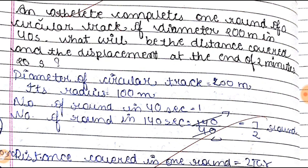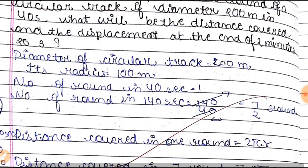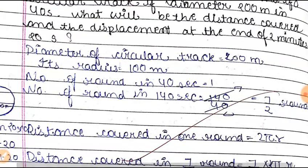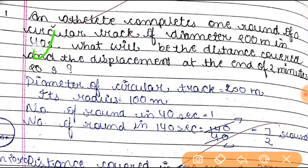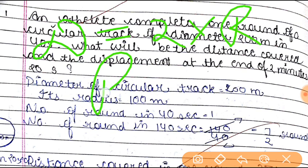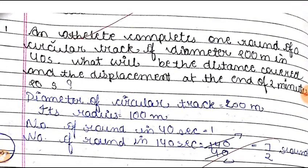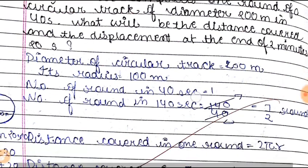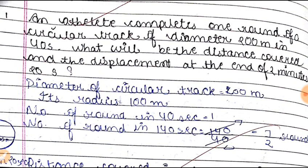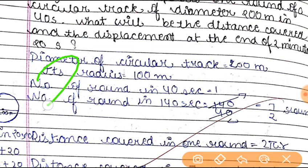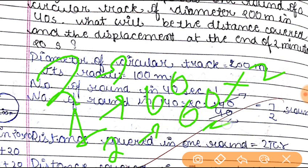We have to find the distance covered and displacement at the end of 2 minutes 20 seconds. So, diameter is 200 meters, time for one round is 40 seconds. Radius equals diameter by 2, so radius = 200/2 = 100 meters. Now, 2 minutes 20 seconds = 140 seconds. So the number of rounds covered = 140 divided by 40 = 7/2 rounds.